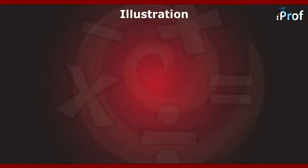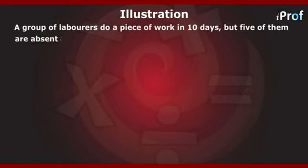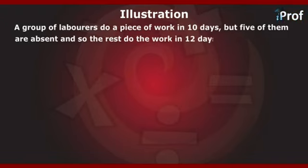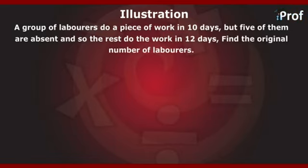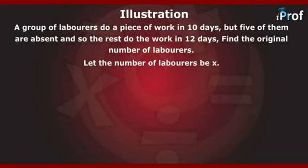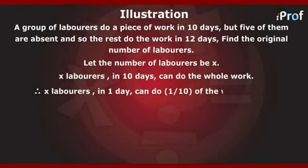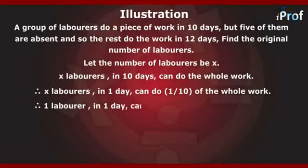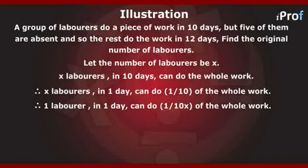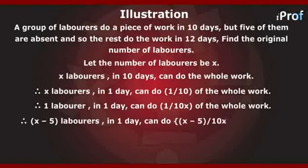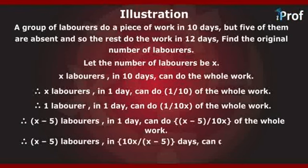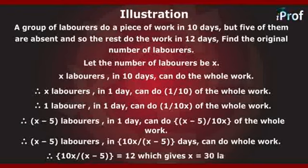The next concept is time and work. A group of laborers does a piece of work in 10 days. Let the number of laborers be x. So x laborers in 10 days do the whole work; x laborers in 1 day do 1/10 of the work; one laborer in one day does 1/(10x) of the work. Therefore (x − 5) laborers take 10x/(x − 5) days to do the whole work. Setting 10x/(x − 5) = 12 gives x = 30 laborers.